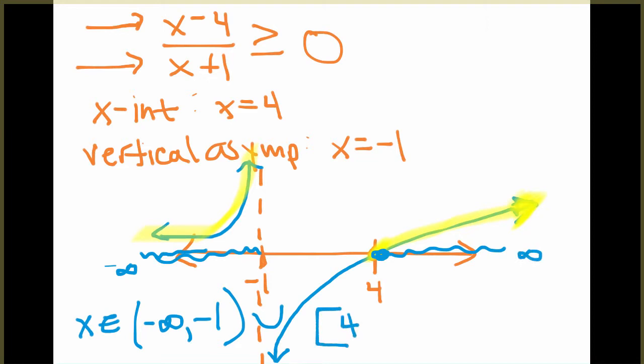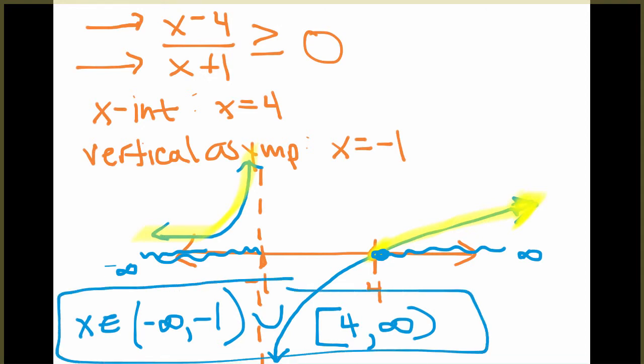And then in my highlighting, it picks up again here at 4 and then continues to infinity. So the 4 has a bracket because it can equal 0 and then to infinity at the end. So the solution here just contains two different intervals.